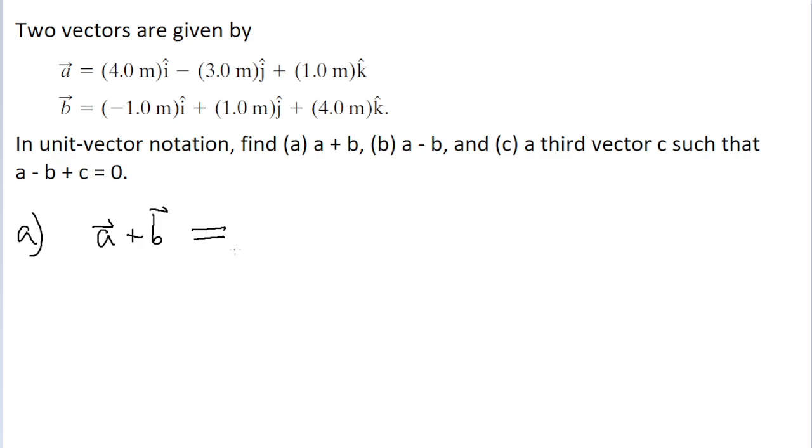So when we do our addition, our new i component should be the sum of the i components of a and the i component of b. So our new i component will be four meters plus, and then our i component for vector b is negative one. Negative one meter. And this is what our new i component will be represented by.